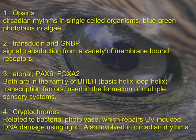Part 4: All genes should have a plausible explanation for alternative functions. Here is a list of genes and their paralog functions. Opsins, for example, have function in circadian rhythms in single-celled organisms, and they're responsible for some blue-green phototaxis in algae. Transducins and GNBPs are both signal transduction cascade proteins that interact with a number of different membrane-bound receptors. Atonal, Pax6, and FoxA2 are all in the family of basic helix-loop-helix transcription factors, and they're all used in the formation of multiple sensory systems. Cryptochromes are found in all varieties of animals, but they are related to bacterial photolyase, which repairs UV-induced DNA damage using light energy, and they are also involved in circadian rhythms.